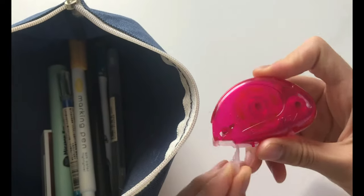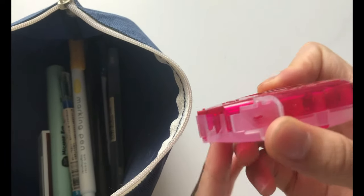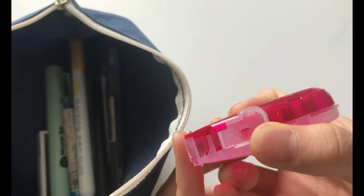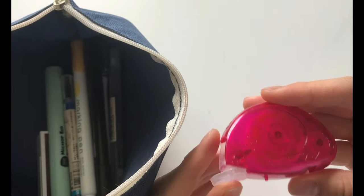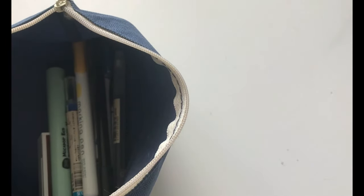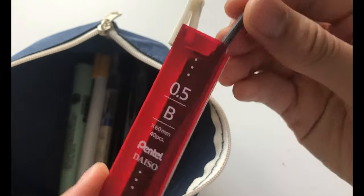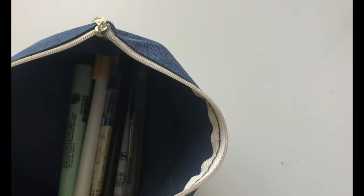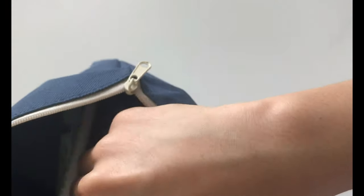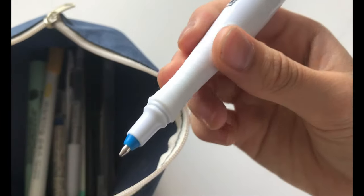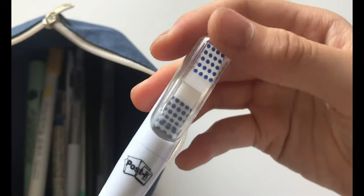Next I have this thing called tape glue. So this is really really useful if you're using washi tape or sticky notes in your notes because you can just place them on the areas you need to stick. Then I just have some 0.5 lead from Pentel. Next I have this pen from Post It. So basically it is just a blue pen but on the other side there are some sticky notes.